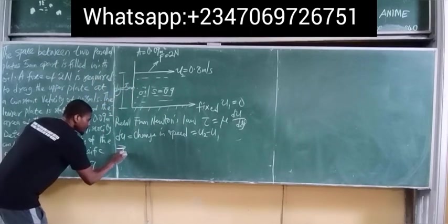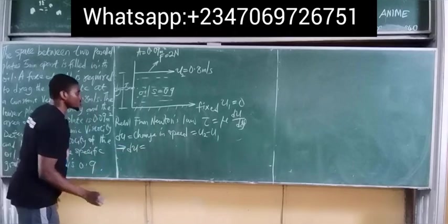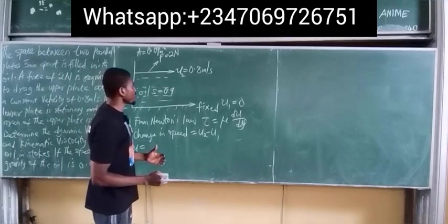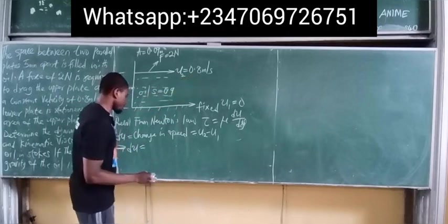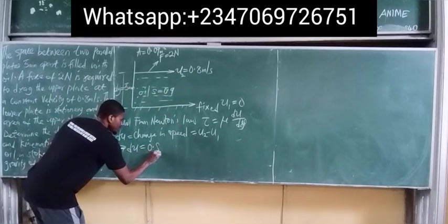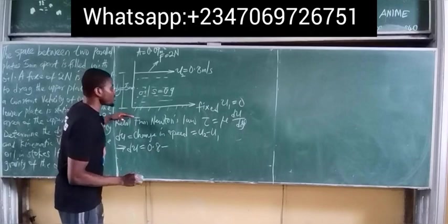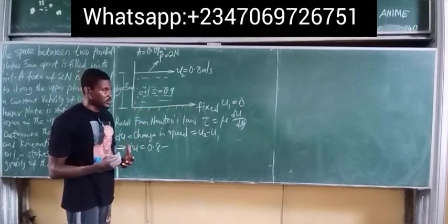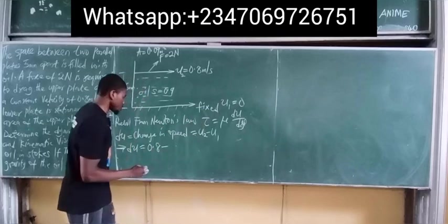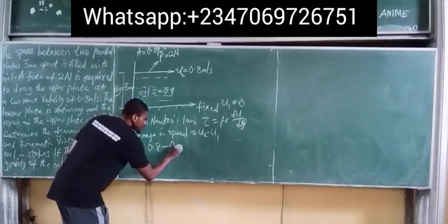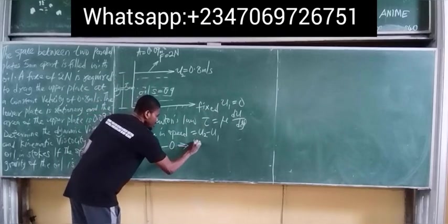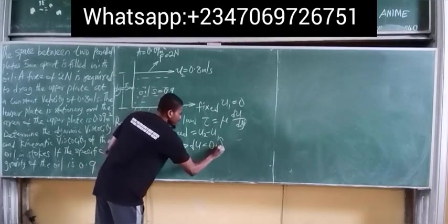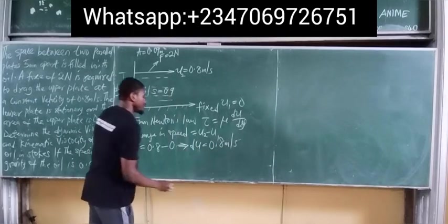This implies that du equals 0.8 meters per second — the speed of the upper plate — minus the speed of the lower plate. Since the lower plate is stationary and fixed, it has no motion, so u1 equals zero. Therefore du simply remains 0.8 meters per second.